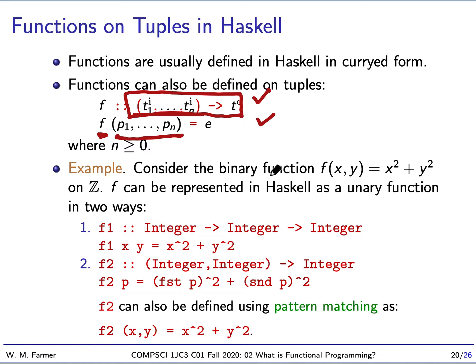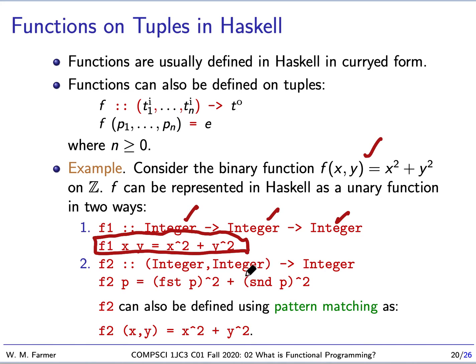Let's take an example. We have a binary function f(x,y) = x² + y² on the integers. How do we do this in Haskell? We can do it as a curried function. It takes an integer, returns a function that takes an integer, that returns an integer. Here's the definition - it looks very similar to the mathematical definition. That is the curried way.